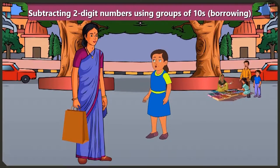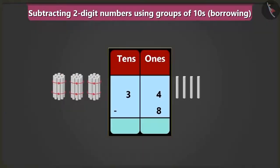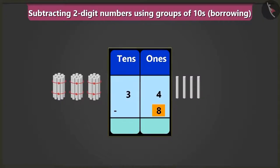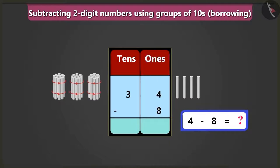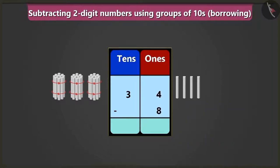Mommy, how is subtraction done? Come, I will explain. Look, to subtract eight from thirty-four, we will write thirty-four and eight in the box of ones and tens. Thirty-four means three tens and four ones. Now we have eight ones, so we will write it in the box of ones — its box of tens will stay empty. Now first of all, we will have to subtract eight from four in the box of ones. But here four is smaller than eight in the box of ones, so how will we subtract eight from four? We cannot subtract a big number from a small number. So we will borrow one ten from the number in the box of tens.